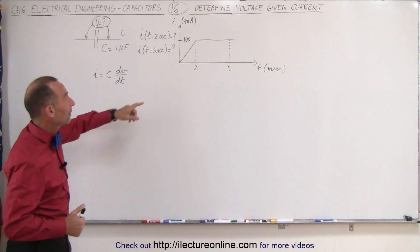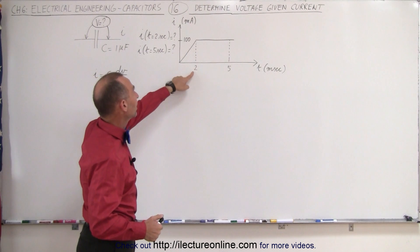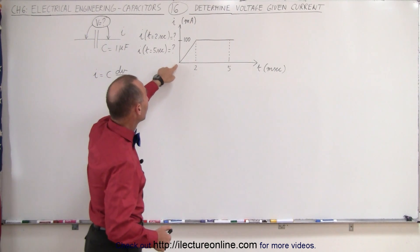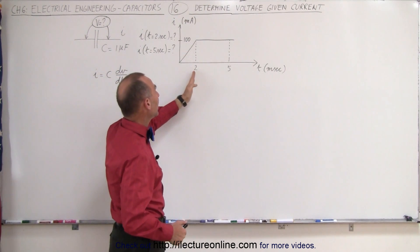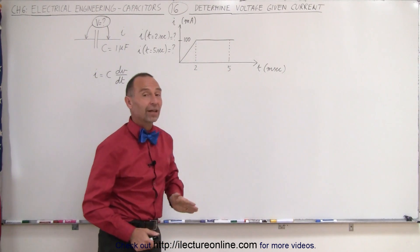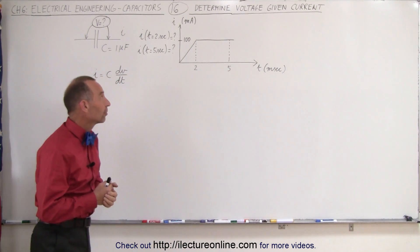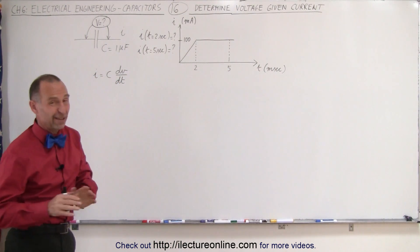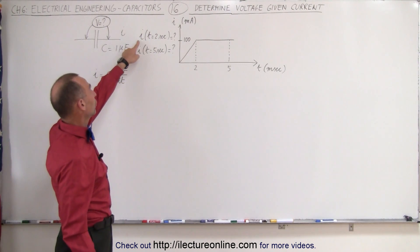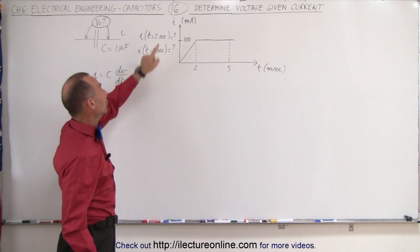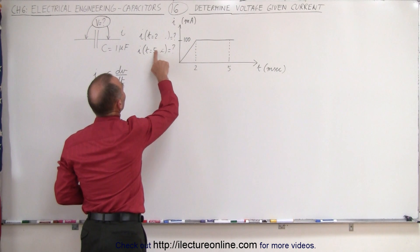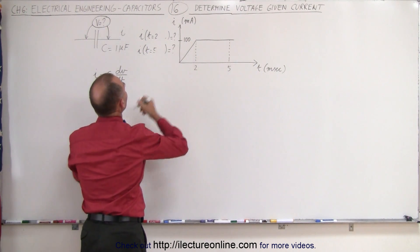In this case we have a current that for the first 2 milliseconds increases from 0 to 100 milliamps, and then remains at 100 milliamps for the next 3 milliseconds, all the way out to 5 milliseconds.